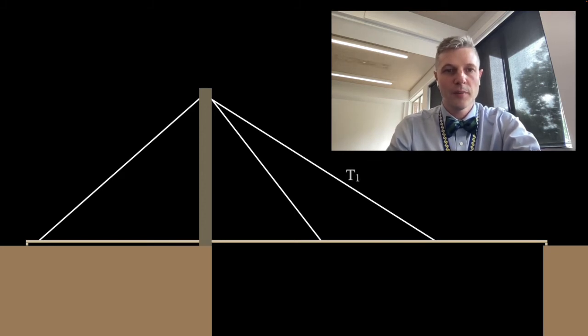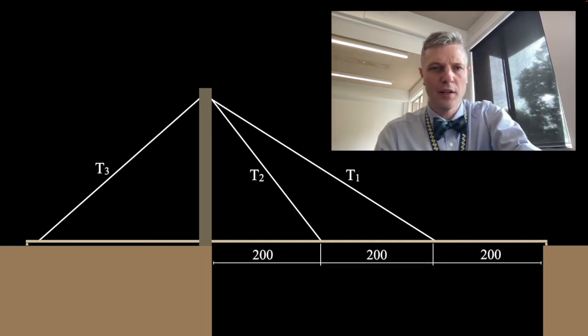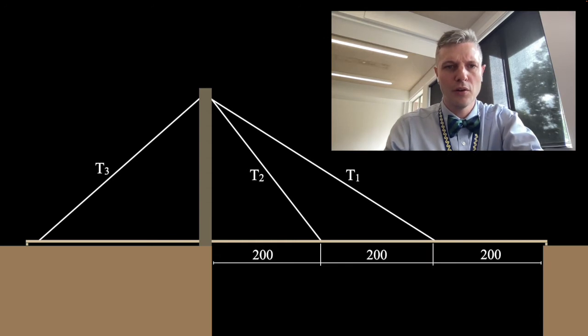Now I'm calling my cables T1, T2, and T3, using the T as in tension. I placed mine in thirds along the deck, so I had 200 millimeters, but you'll have different values there potentially.